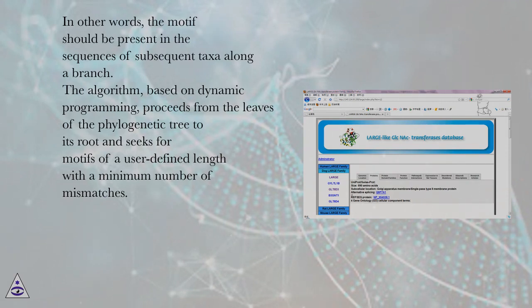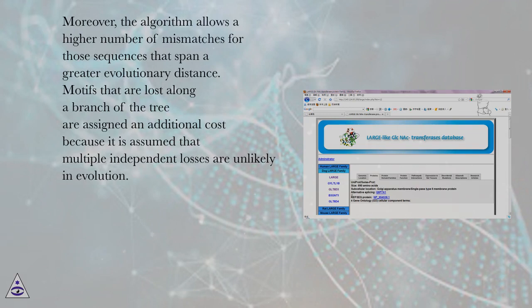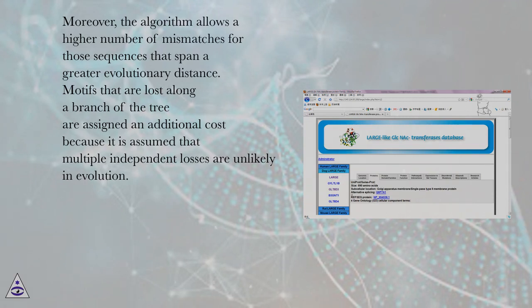The algorithm, based on dynamic programming, proceeds from the leaves of the phylogenetic tree to its root and seeks motifs of a user-defined length with a minimum number of mismatches. Moreover, the algorithm allows a higher number of mismatches for sequences that span a greater evolutionary distance. Motifs that are lost along a branch of the tree are assigned an additional cost, as multiple independent losses are assumed unlikely in evolution. To compensate for spurious hits, statistical significance is calculated based on a random set of sequences in which no motifs occur.